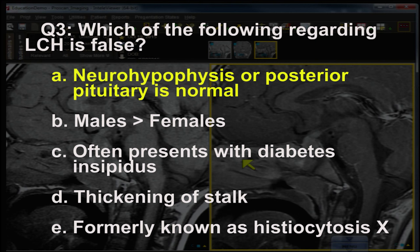The other choices are true. You may or may not know that males are more often affected than females, but you should absolutely know — even from residency and medical school — that this condition often presents with DI. Thickening of the stalk is a characteristic manifestation, and everyone knows it was formerly known as histiocytosis X. Your choices should really boil down to A and B.